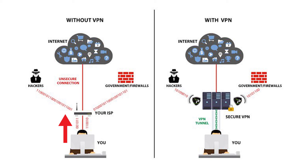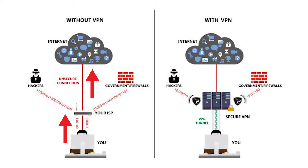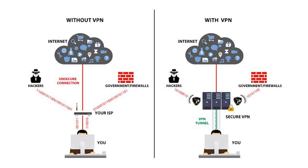Your ISP such as CenturyLink or Comcast assigns you what they call an IP address — basically a digital address for your computer. That information then goes out and connects to Facebook, news websites, or anything like that. On the left and right hand side of the illustration you can see the potential for hackers or government agencies to restrict what you access through censorship, or hackers may want to steal your social security number or email information for identity theft.